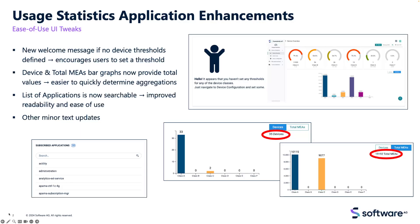The first one is there's a new welcome message of 'no device thresholds have been defined.' Previously it would just be big text that says 'no thresholds,' and the user didn't really understand what they were supposed to do. Now there's a friendly message that instructs you to go set some thresholds if you would like.